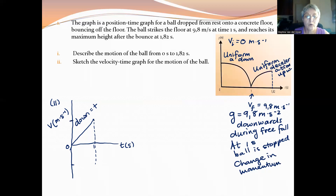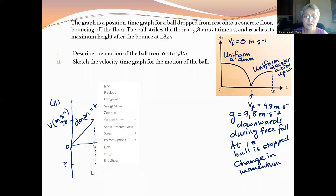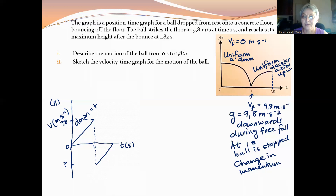The value where it hits the ground is 9.8. But I don't know what the value is from where it bounces off the ground. All I know is that the two velocity sections of the graph must be parallel, because the gradient of a velocity-time graph gives us the acceleration. And the acceleration is uniform downwards, which we took as our positive direction. So from one to 1.83 seconds, the ball is bouncing upwards, which is our negative direction.